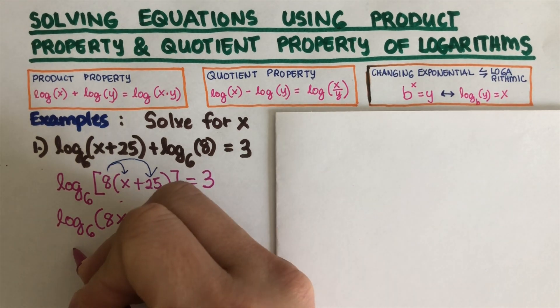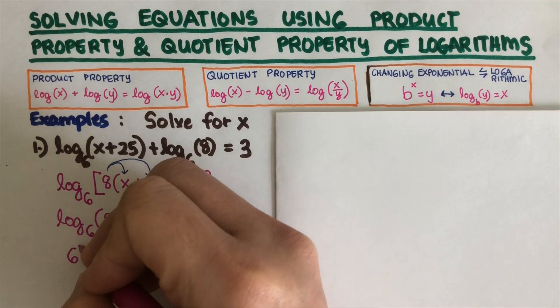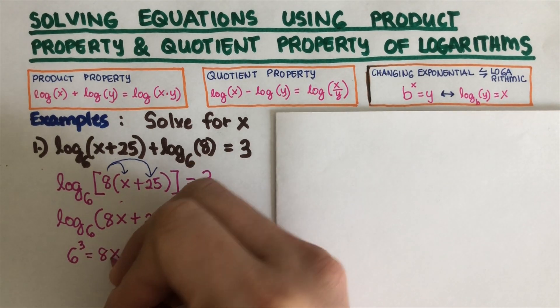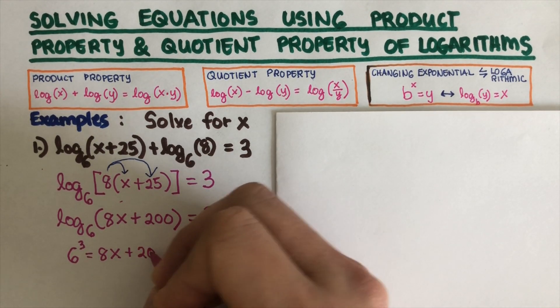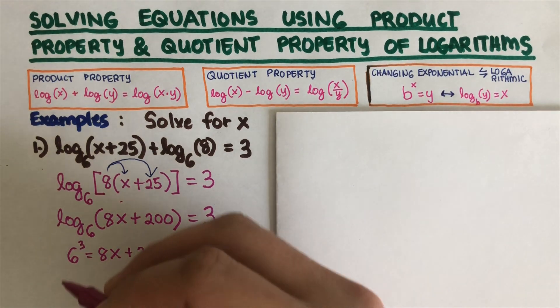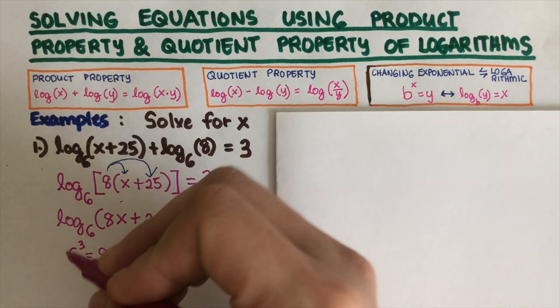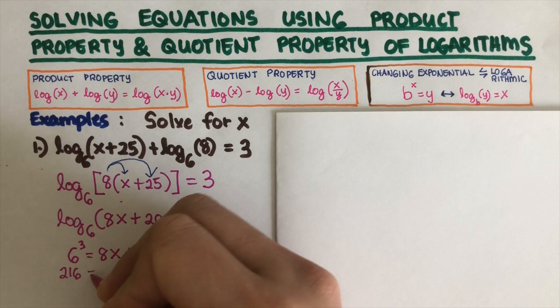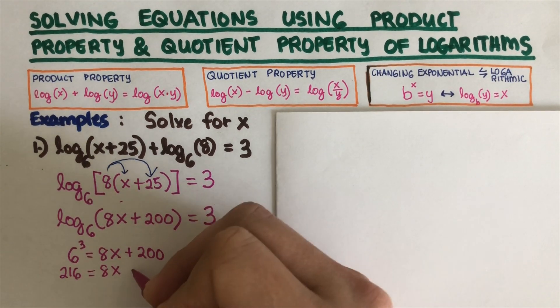Using the changing this logarithmic form to exponential form, this would come out to be 6 to the power 3 is equal to 8x plus 200. If we have 6 to the power 3, that is 216, so this is 216 equals 8x plus 200.